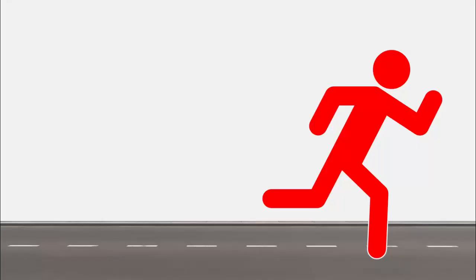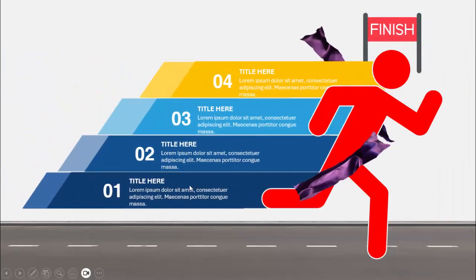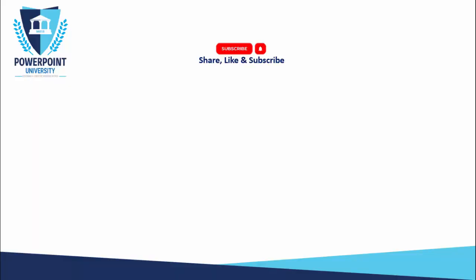In today's tutorial I'm going to show you how to create a four racing options infographic slide in PowerPoint. As you can see, I've used this particular icon, and when I click it will show the four options with different color combinations, where I've added the option number, the title, and the detail text.